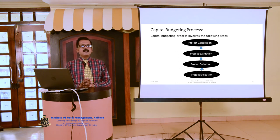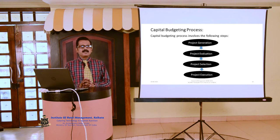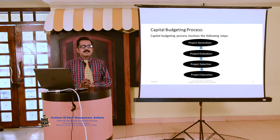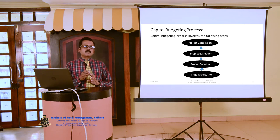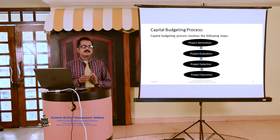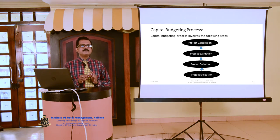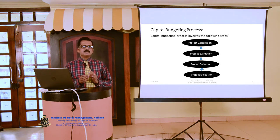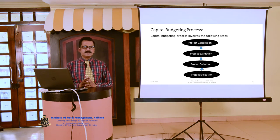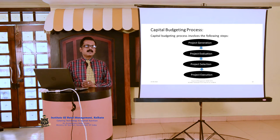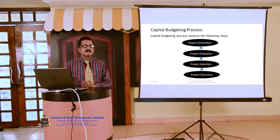Now, the capital budgeting process — what are the different steps involved? The capital budgeting process involves four steps: first, project generation; second, project evaluation; third, project selection; and fourth, project execution.